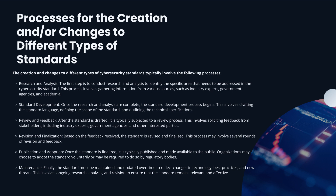The first step is to conduct research and analysis to identify the specific area that needs to be addressed within the cybersecurity standard. Then, in standard development, once research and analysis are complete, the process can begin, which involves drafting standard language, defining the scope of the standard, and outlining the technical specifications. For review and feedback, after the standard is drafted, it is typically subjected to a review process which could involve soliciting feedback from stakeholders, including industry experts, government agencies, or other interested parties.